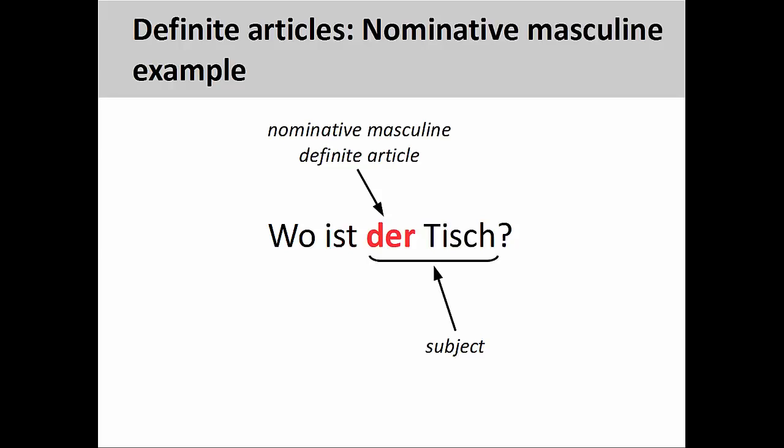Since no real action is described in the sentence, the masculine definite article Der indicates that the noun that follows, Tisch, is in the nominative case and therefore the subject of the sentence.